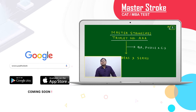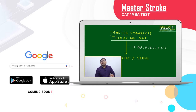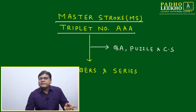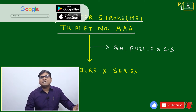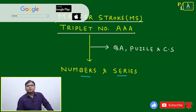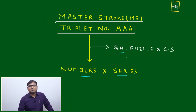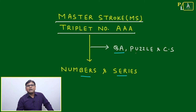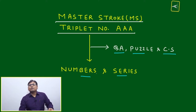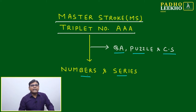Welcome to this master's talk related to the triplet number AAA. If any number is represented in the form of AAA, where A is any single digit number, then how to deal with that number. This number may be given in individual format or in series format. Chapter-wise, it is related to numbers and series, and it will affect your QA and quantitative ability preparation, and help develop puzzle-solving ability and common sense. We will understand the different categories of questions related to the triplet number AAA.